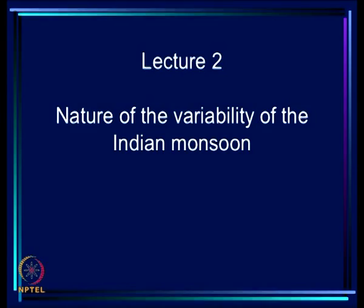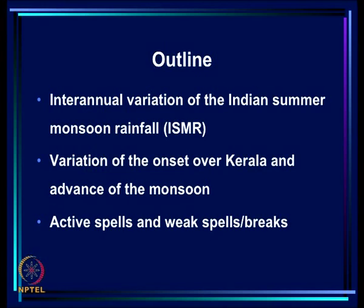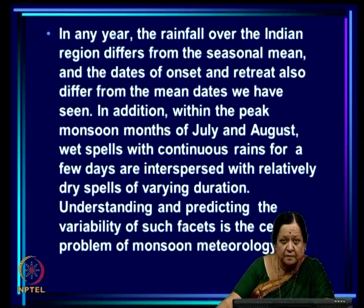Good afternoon. In the last lecture we looked at mean rainfall patterns over the Indian region as well as all India rainfall. In this lecture we look at the nature of variability of the Indian monsoon using conventional and satellite data. Today's outline: first, inter-annual variation of Indian summer monsoon rainfall — the year to year variation of all India average summer monsoon (June to September) rainfall. Then we discuss variation of onset date over Kerala, variation in the advance of the monsoon, and active spells and weak spells or breaks.